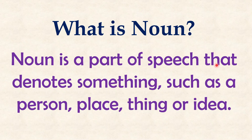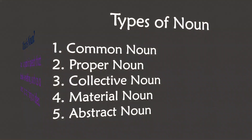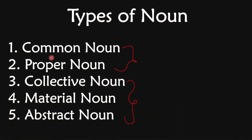A noun is a part of speech that denotes something such as a person, place, thing, or idea. In short, the name of a person, place, thing, or idea is called a noun in English grammar. As taught in yesterday's lecture, we already learned about common noun and proper noun. So in today's lecture, let's learn about collective noun, material noun, and abstract noun.